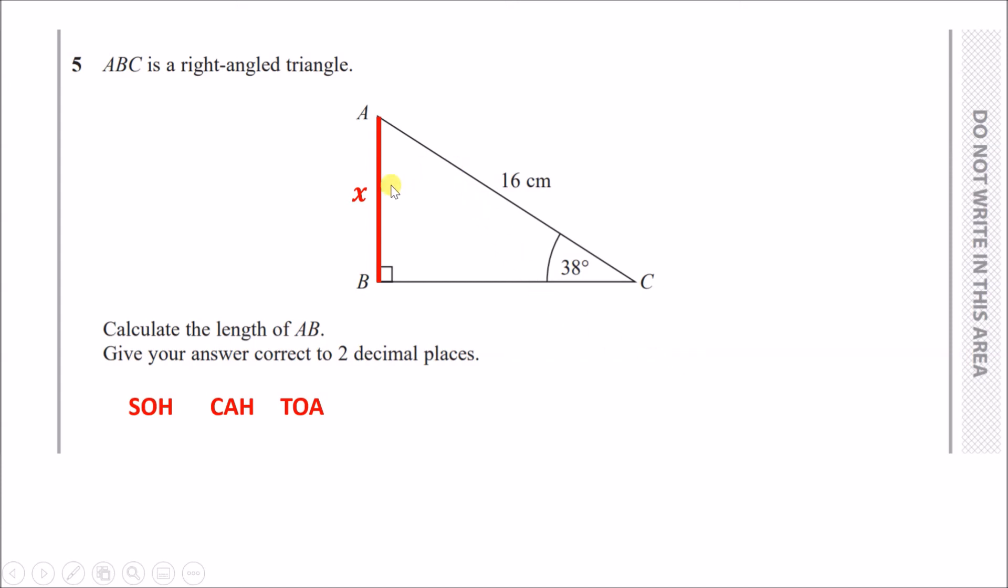To solve this, label it nicely. Ask yourself: what do x and 16 represent? Because the angle is 38 degrees, the length x is opposite the angle, and the diagonal side is the hypotenuse. So we write O and H.